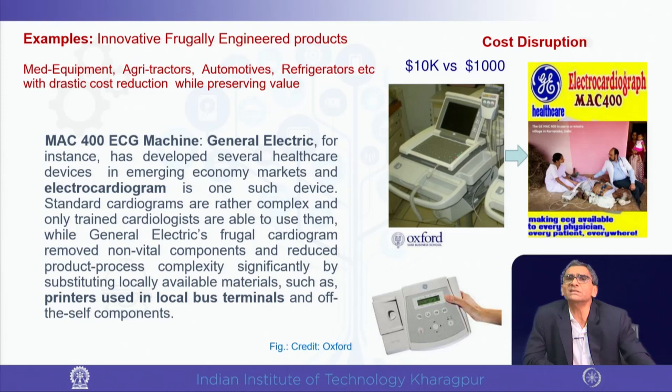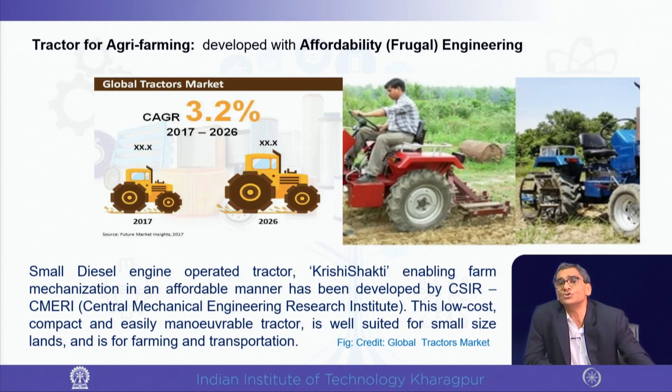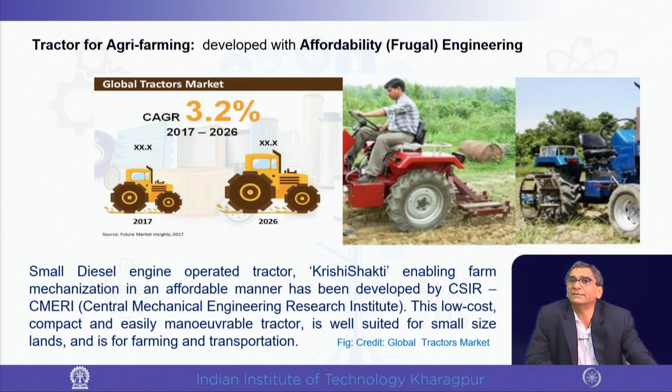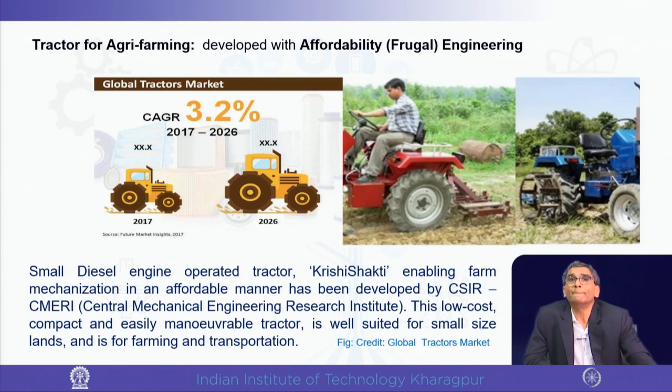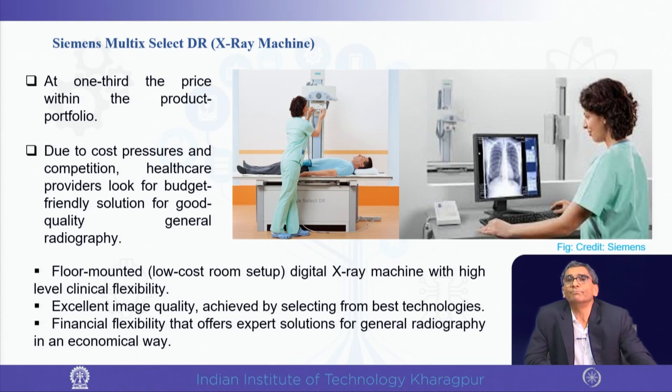Another example is the Krishi Shakti tractor, costing only two lakh rupees, developed by CMRI (Central Mechanical Engineering Research Institute), a CSIR organization, for agricultural purposes including farming and transportation.